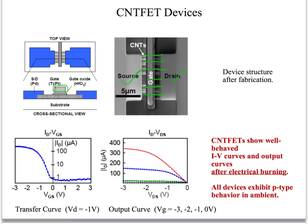There are two interesting phenomena visible from the electrical measurements. The first is that the IV curves show semiconducting behavior. If it were all metallic tubes, it should be a flat line. We remove the metallic tubes by applying a high drain voltage — we invert the semiconducting tubes and apply a high drain voltage so the metallic tubes are destroyed, leaving only the semiconducting tubes to show this transistor behavior.